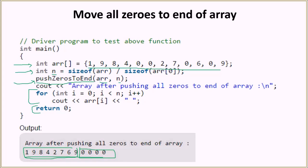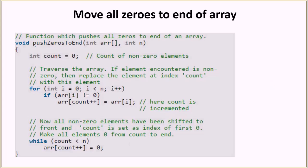Now let's get into the function pushZerosToEnd, which takes the array and its size as arguments. We initialize the count variable as zero. Then we traverse the array — if the element encountered is non-zero, we replace the element at index count with this element. This for loop iterates over each element of the array, and if array[i] is not equal to zero, we update the value at index count with the value at index i and then increment count, which will be used in the next iteration.